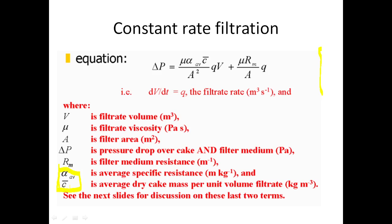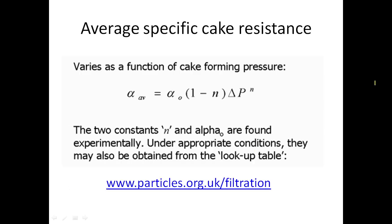If we were assuming incompressible, we wouldn't need average values, but the simulation doesn't make that assumption — it can cope with compressible cakes so long as they follow the constitutive equation. Here is the constitutive equation for the specific resistance. Let's think about the term n. If we had an incompressible system, n equals zero, giving no dependency on pressure drop; 1 minus n would be 1 and we simply define alpha average equals alpha naught. That is our incompressible statement: specific resistance stays constant regardless of the pressure drop over the filter cake.